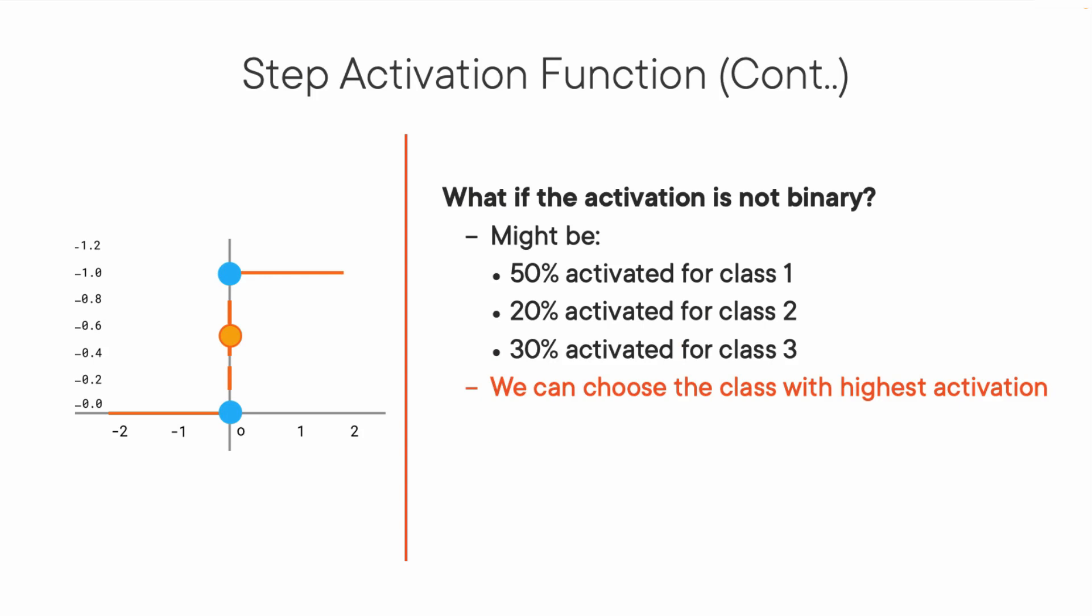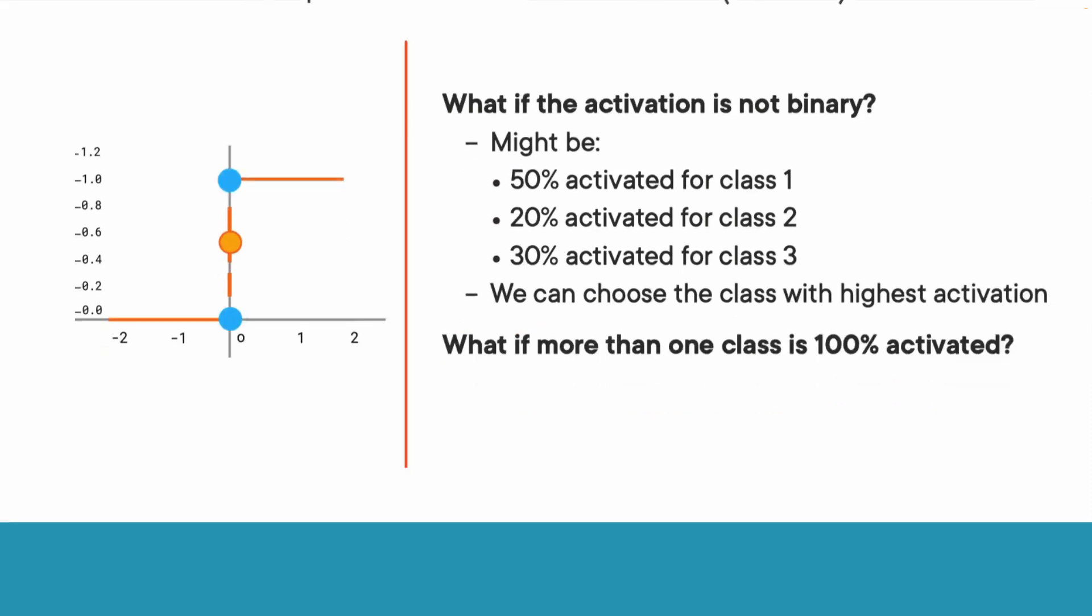Seems like we solved the problem. But hold on, what if more than one neuron says 100% activated? The problem still persists.